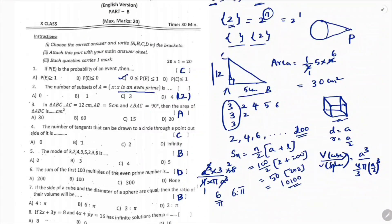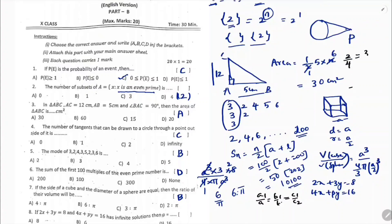Next question: the two lines 2x + 3y = 8 and 4x + py = 16 have infinite solutions; find the value of p. For infinite solutions, a1/a2 = b1/b2 = c1/c2. Substituting: 2/4 = 3/p, so cross-multiplying gives p = 6. The correct answer is B, which is 6.